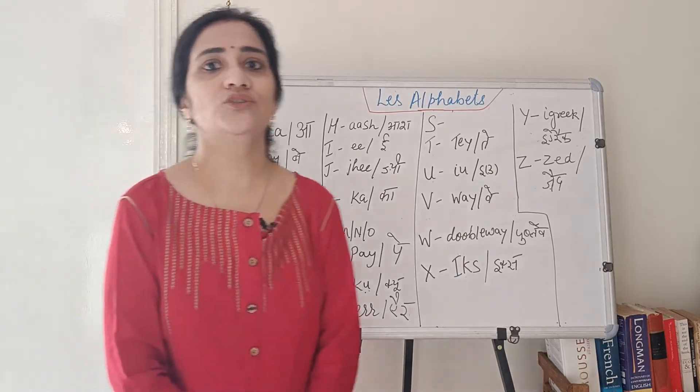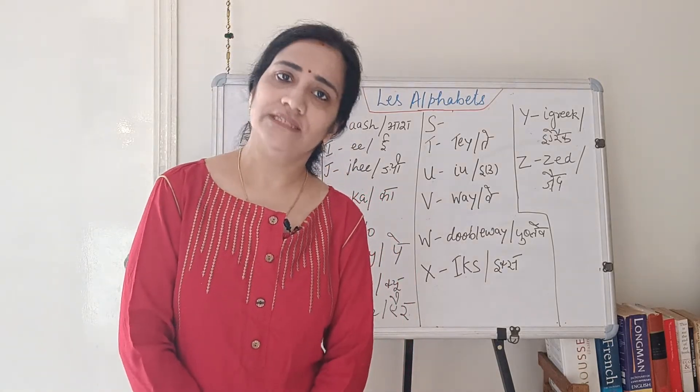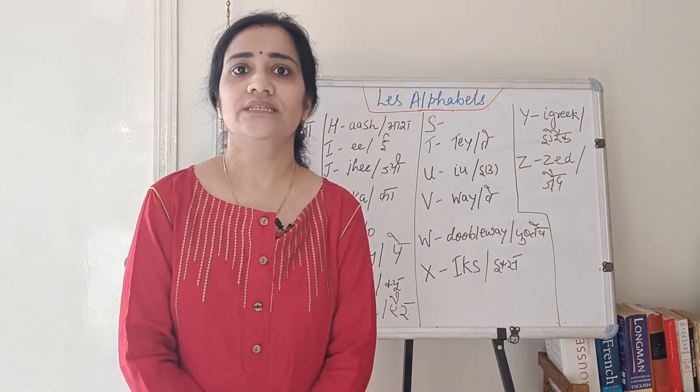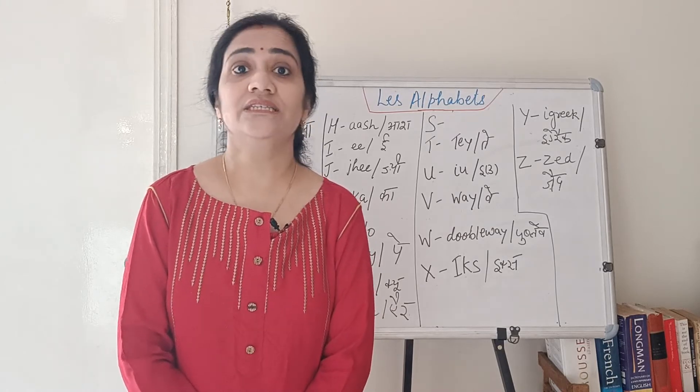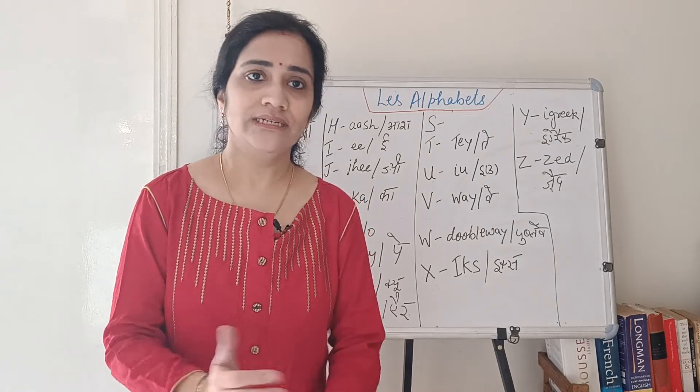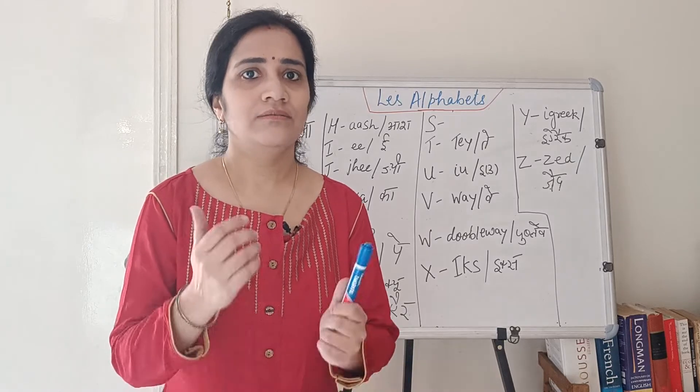In English, we have the 26 letters pattern. In French, we have the same, 26 letters, but the pronunciation is obviously different. So let's have a look how it is different.